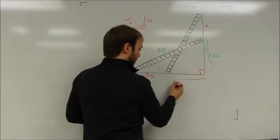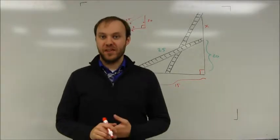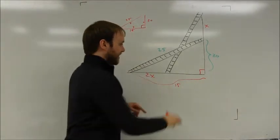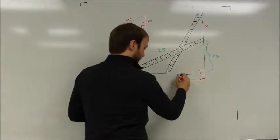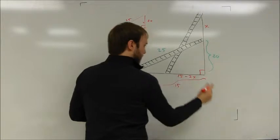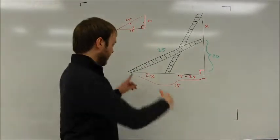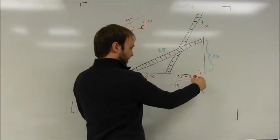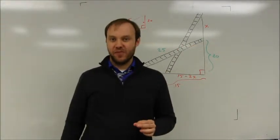Which means that I can represent this length using the whole length of 15 and the shorter length of 2x. That's just going to be 15 minus 2x. And this is very crucial because now you'll notice that I've labeled all of the segments that make up this first ladder. I want to try to do the same thing for the second ladder as well.